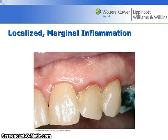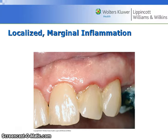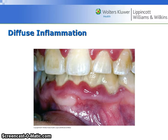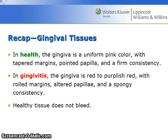This image shows localized, marginal inflammation. Note the reddened tissue color along the gingival margin extending down into the papilla on these maxillary anterior teeth. This image shows diffuse inflammation, which involves the gingival margin, papilla, and attached gingiva of the mandibular anterior sextant. In health, the gingiva is a uniform pink color with tapered margins, pointed papilla, and a firm consistency.